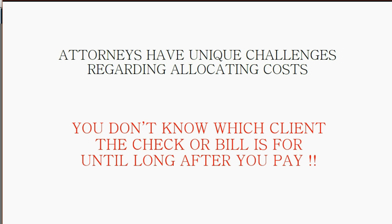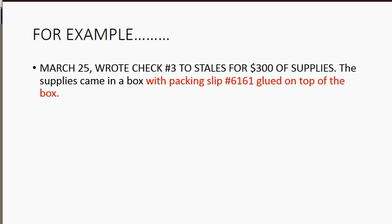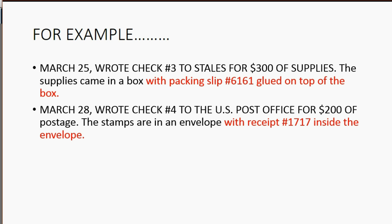Sometimes you don't know which client a check or bill is for until long after you pay. For example, on March 25th we wrote a check to Staples and Staples gave us a box of supplies with a specific packing slip number on the top of the box. On March 25th we don't know which client we'll use the supplies for, but we know that during April we will be using them for a particular client. Same thing with the March 28th check to the U.S. Post Office for $200 for postage. The stamps came in an envelope with a specific receipt number on March 28th, but we will use these stamps for a particular client during April and we don't yet know who it is.